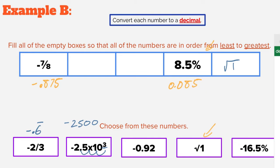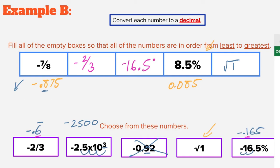Next is negative 9.2, which has already been done for us as negative 0.92. And negative 16.5% moves the decimal two places to the left to give us negative 0.165. Now we need a number between negative 0.875 and positive 0.085. We can immediately rule out negative 2,500 — it's far more negative. Negative 0.92 also doesn't fit between those values. That leaves negative 0.6 repeating and negative 0.165, which fit in order from least to greatest.